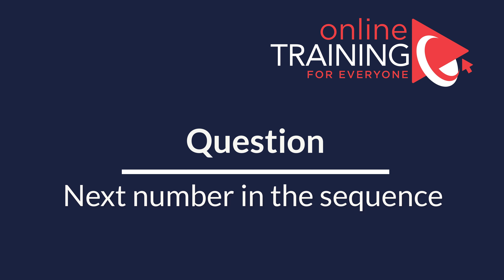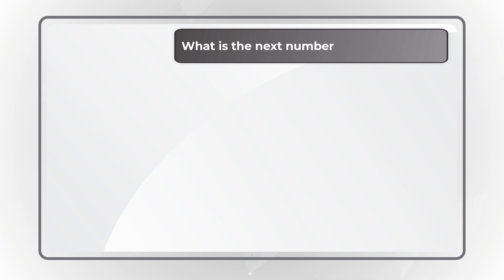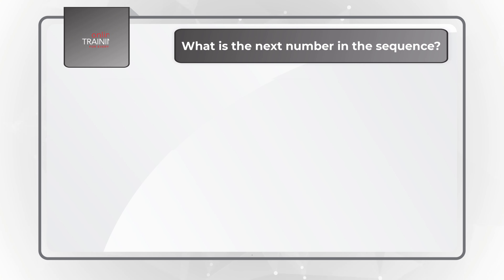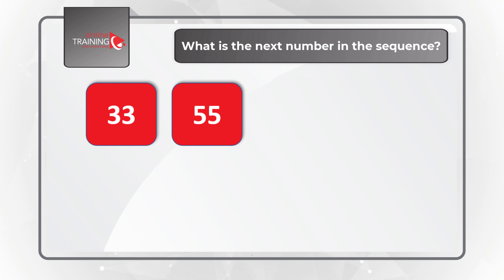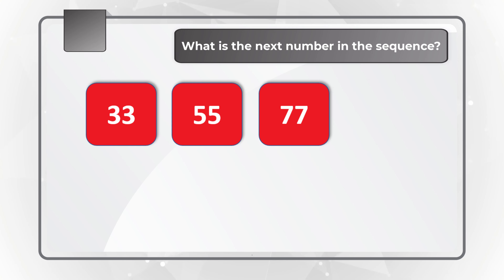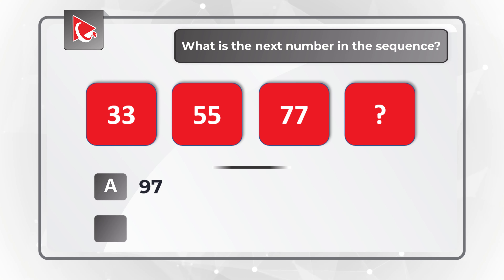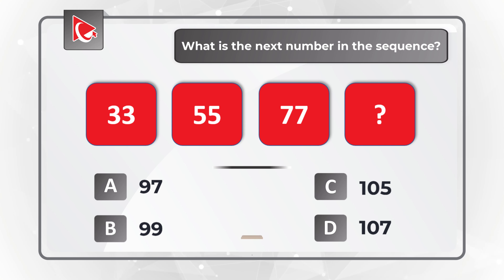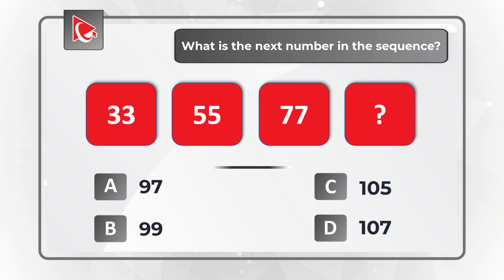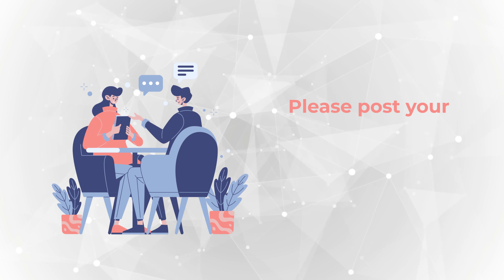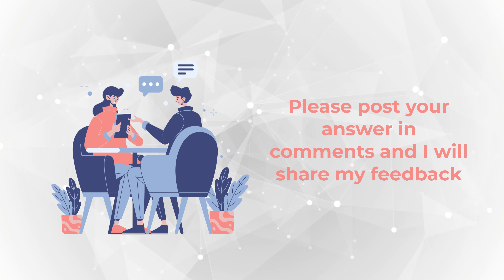Would you like to try your own skills? This is your opportunity to find the next number in the sequence. You are presented with 33, 55, 77, and one number is missing. Choices: A=97, B=99, C=105, D=107. Give yourself time to see if you can solve this challenge, and once you're ready, post your answer in the comments. Thanks for participating and good luck!